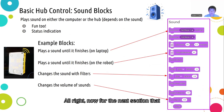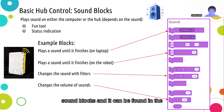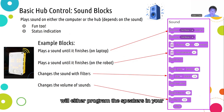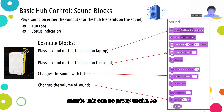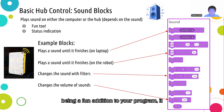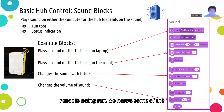Now for the next section: sound blocks. These are all the sound blocks and they can be found in the light purple section. These blocks will either program the speakers in your Spike Prime hub or the speakers inside your laptop and will play different sounds. Similarly to the light matrix, this can be a fun addition to your program and can also indicate statuses when your robot is being run.